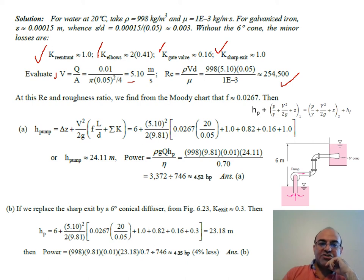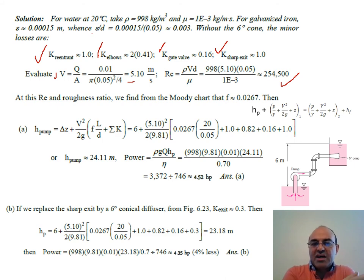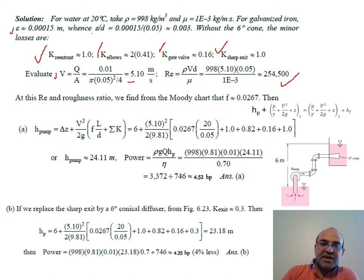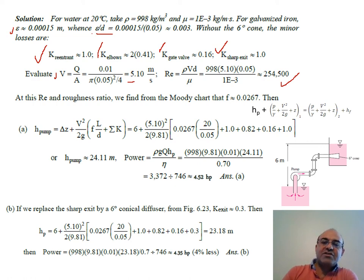For roughness, galvanized iron has epsilon given in the roughness table. We find epsilon/D = 0.003, and with Reynolds number and epsilon/D, we use the Moody chart or Colebrook or Haaland equation to find friction factor f.